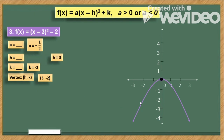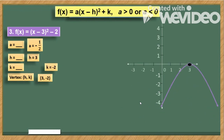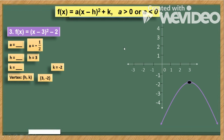Since h is positive 3, the parabola moves 3 units to the right. Since k is negative 2, the parabola moves 2 units downward — 2 units below the x-axis. Note: the axes are the x-axis and y-axis. Those are the three examples of our quadratic function graphs.